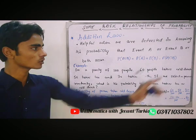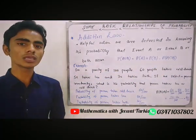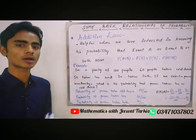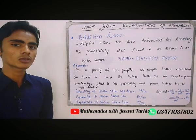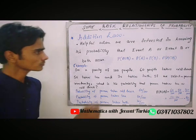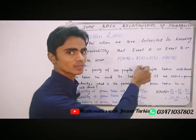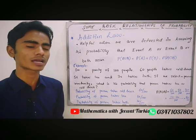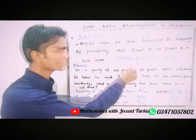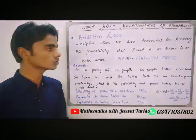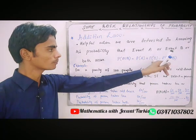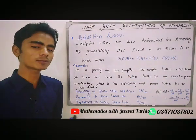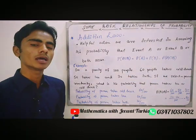We subtract the intersection because when probability of A is counted, all experimental outcomes from event A are included, and when probability of B is counted, all experimental outcomes from event B are included.